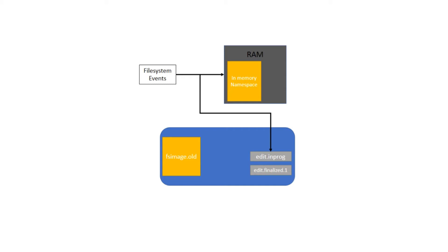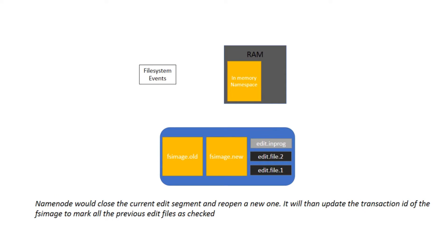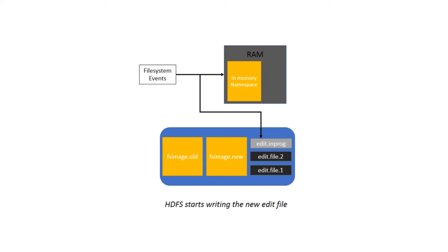You can perform this manually by executing the save namespace Hadoop command. Once executed, the system writes the in-memory namespace to disk as a newer version of the FS image. It will close all the edit files until that point and mark them as checked, meaning the transactions up to that point have been applied to the FS image and can be disregarded. It does this by updating the FS image version and the scene TX ID. HDFS then starts writing all newer transactions to a fresh edit file.